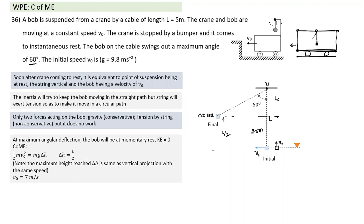Maximum height h = v₀²/(2g) = gL/(2g) = L/2, which confirms our result. This is a simple but elegant connection between pendulum motion and projectile motion.